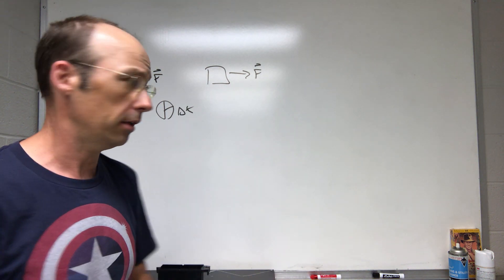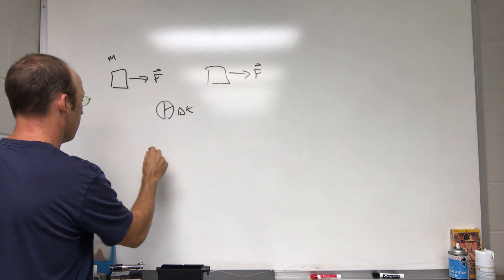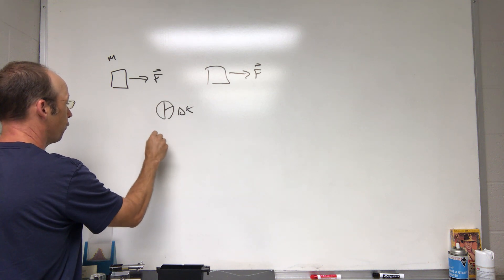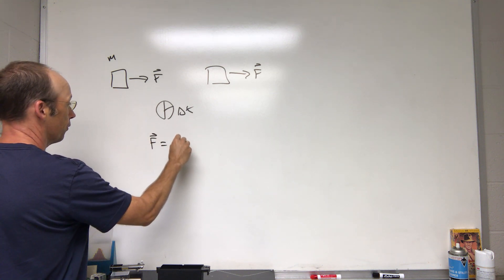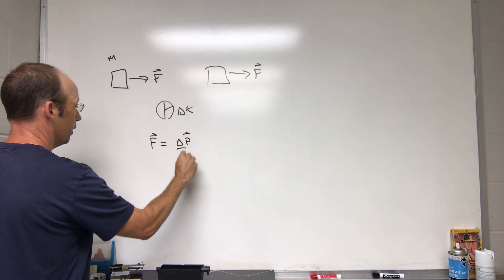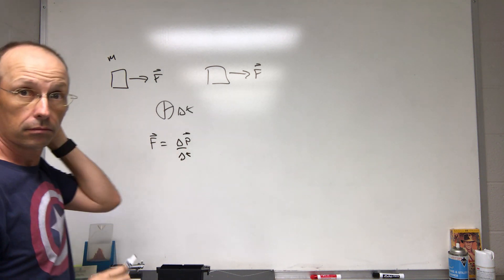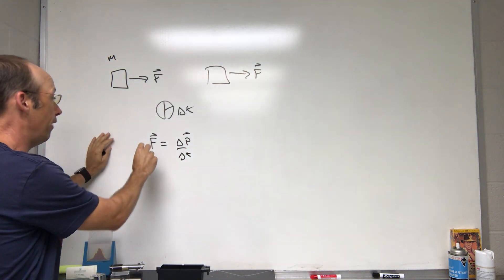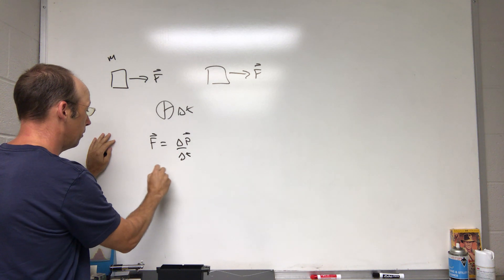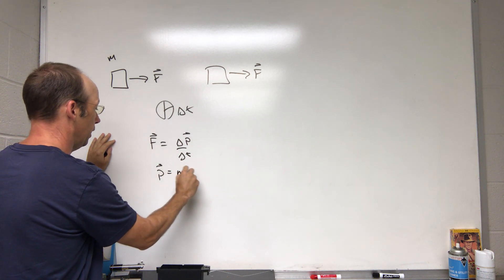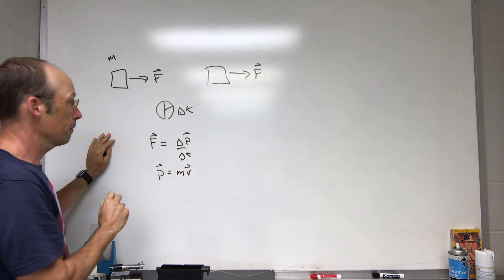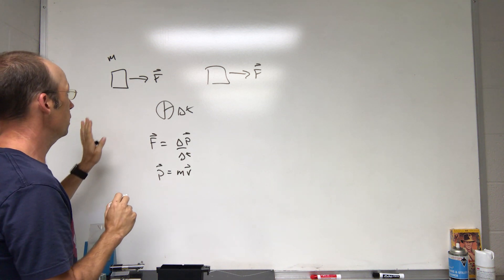The momentum principle says if the force is constant, F equals Delta P over Delta T. That's the momentum principle, that's the net force. And P is momentum, P equals M V for low speeds.